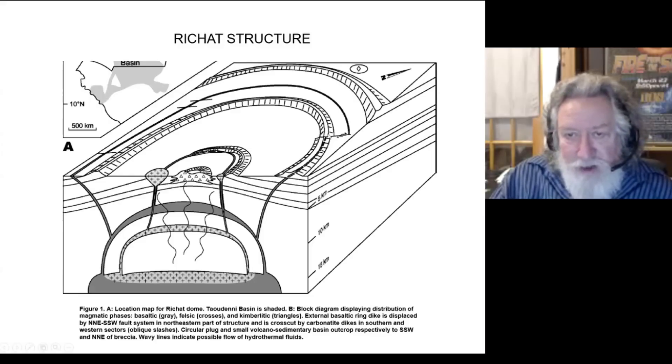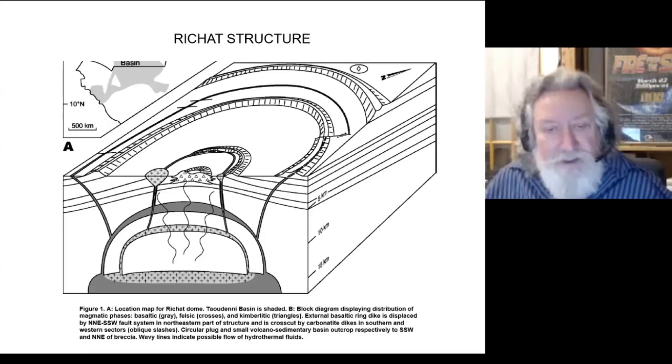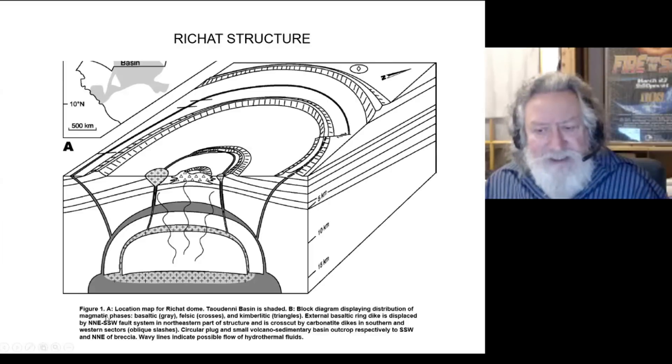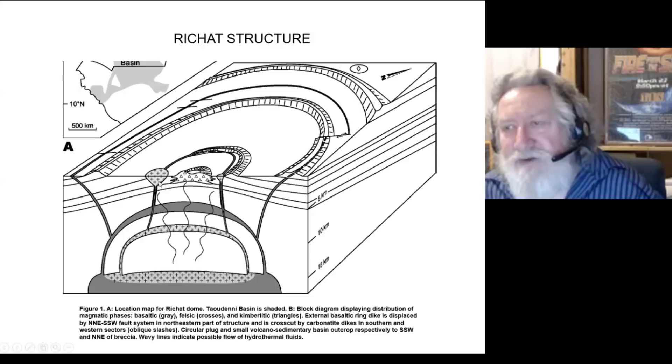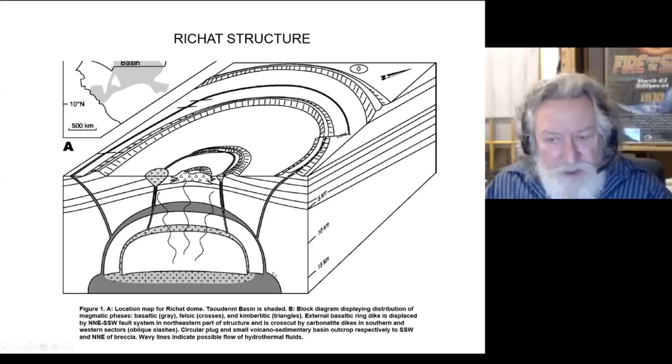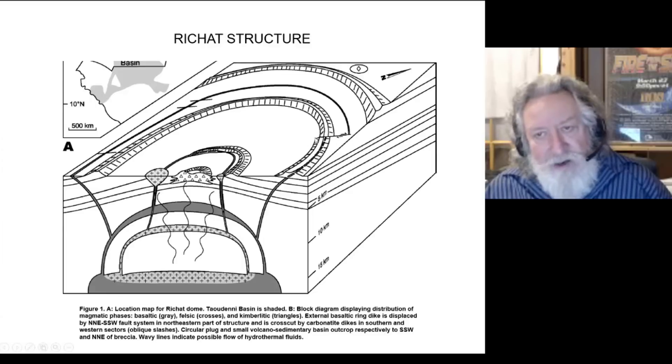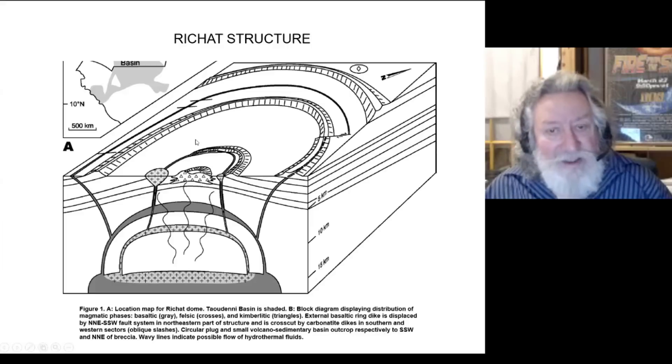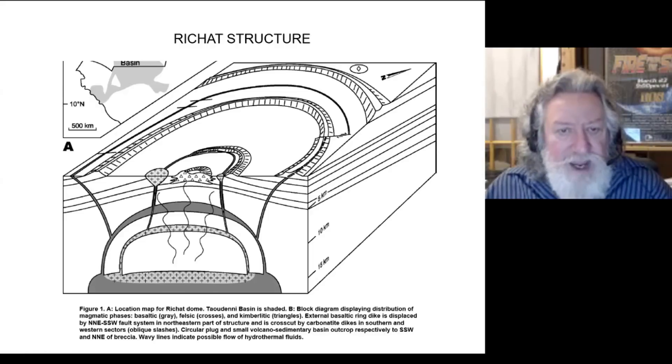There's a fault system, like for example, right here, you see, there's a fault and offsetting in the rings and that's undoubtedly due to the uplift. You've got, as it says here, magmatic phases. So you've got the basaltic magma, which is the gray, and then you've got the felsic magma, which is crosses, which is curious because you've got this mixture of these very highly contrasting types of magma associated with each other. External basaltic ring dike is displaced by a north northeast, south southwest fault system in the northeastern part of the structure. That's this right here that it's referring to. It's cross cut by carbonite dikes in southern and western sectors, which are the oblique crosses, the slashes up there.